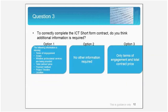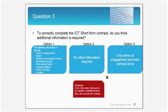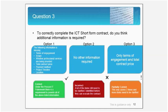Let's now examine, given the scenario, what additional items should be implemented on the ICT short form contract. Option 1 lists a fair few elements. Option 2 says no information is required. And Option 3 states that only terms of engagement and total contract price are needed. Option 1 is the correct answer. A fair few items are needed to be implemented, which include terms and conditions, scope, contract price, payment methods, amongst other things.